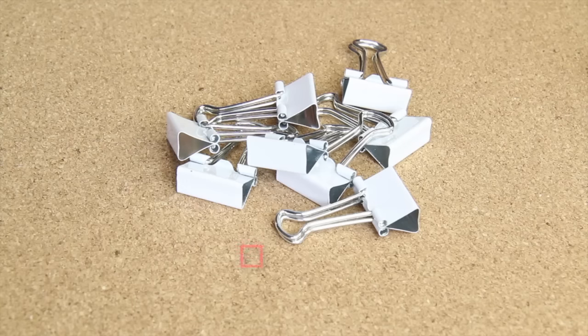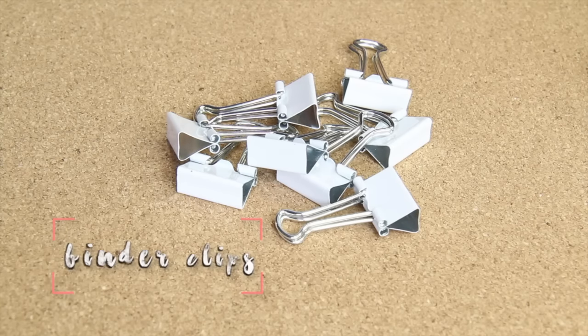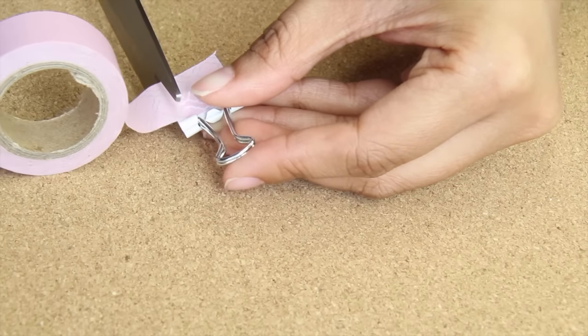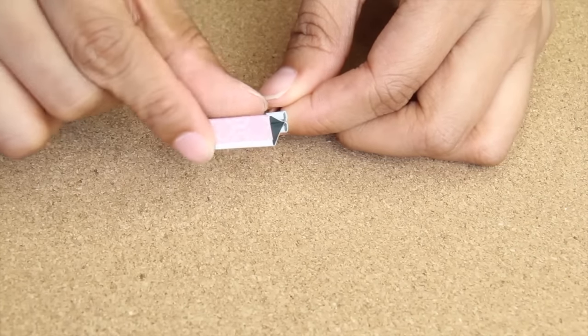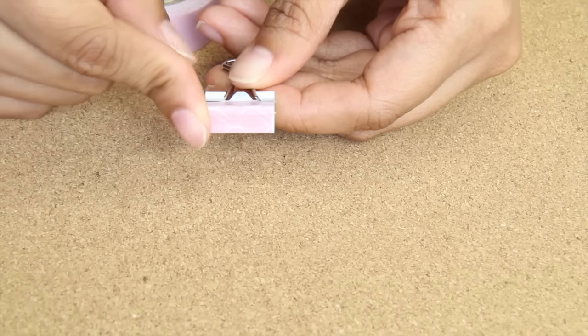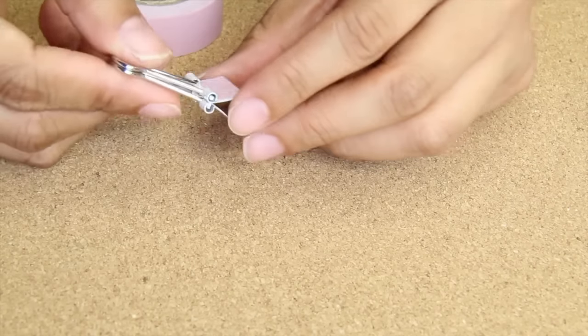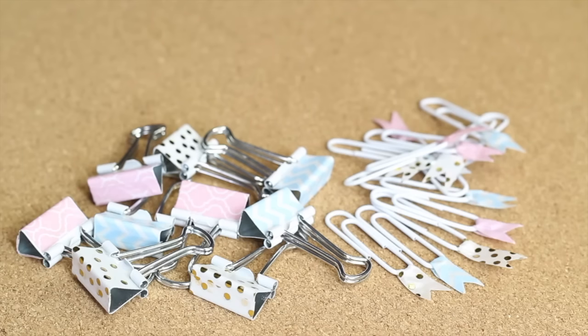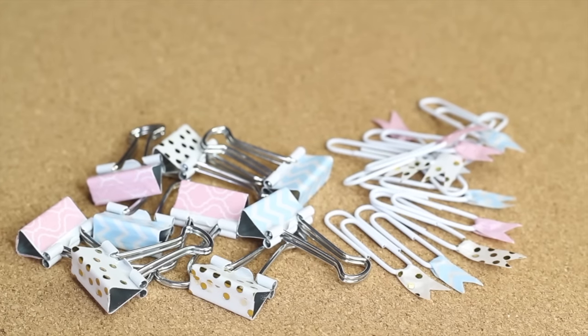And now to spruce up your binder clips if you have any that are lying around that are boring or old - now is the time to give them some personality. So again I'm just using washi tape and cutting them to size and folding them over. You can also coordinate your binder and paper clips by subject by using different color washi tape - it's a great way to spruce up your supplies as well as stay organized.